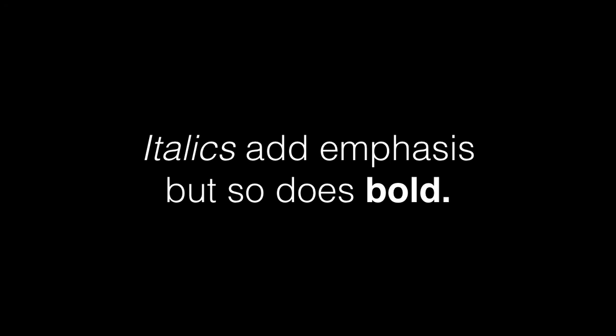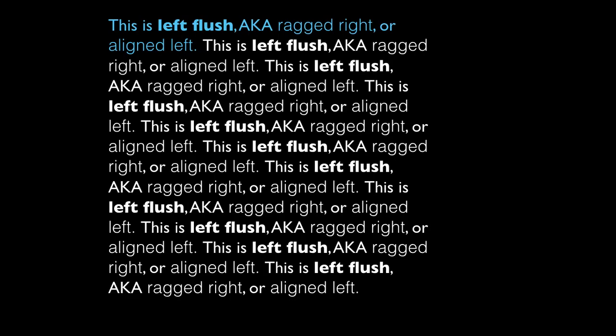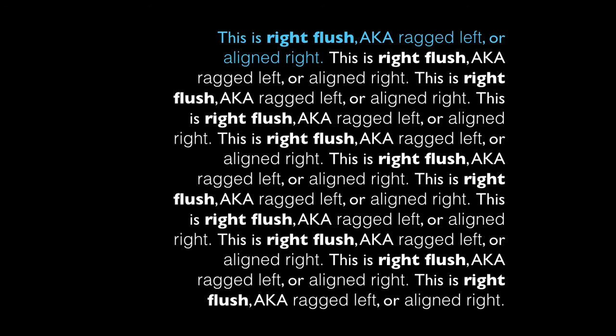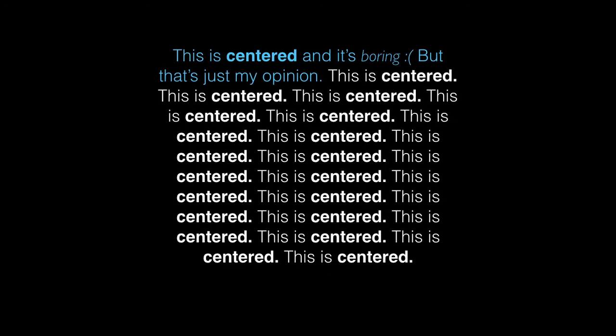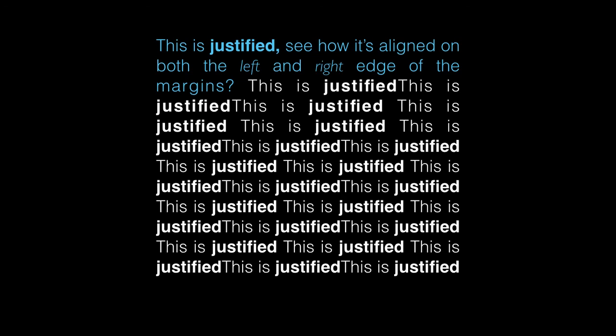This is left flush — all the text is aligned left with a ragged edge on the right, also called ragged right or justified left. This is right flush, or ragged left, aligned right, justified right. Centered justification is pretty boring — you should think about how you can experiment with your layout and not just lean on centered justification as a crutch. Justified means the text is aligned on both the left and right edge of the margin.